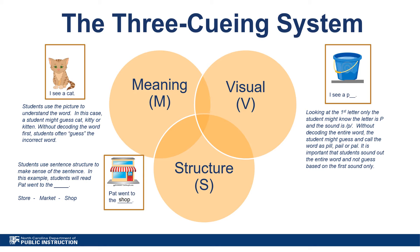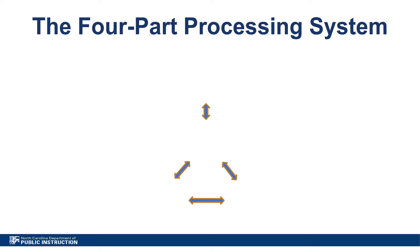We have come to know that the three-cueing system is not grounded in research. This model minimizes the role of letter-sound correspondence, and the strategies encouraged by the three-cueing system fail to acknowledge how strong readers decode by sounding out words. In an effort to understand more about how students decode and recognize words, let's take a look at the four-part processing system developed by Seidenberg and McClelland, which shows the process involved in decoding unfamiliar words.